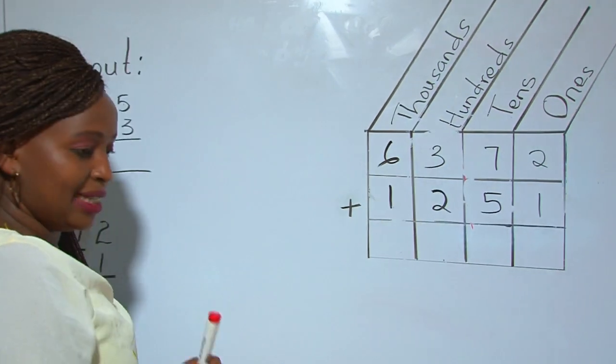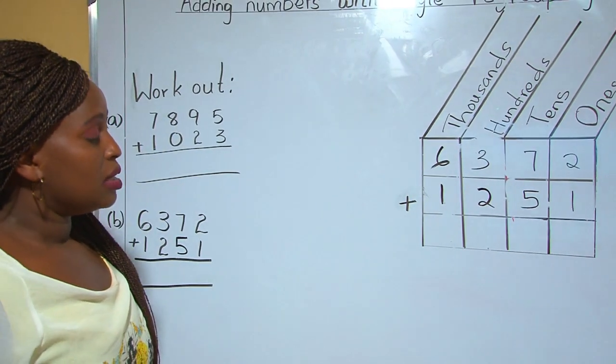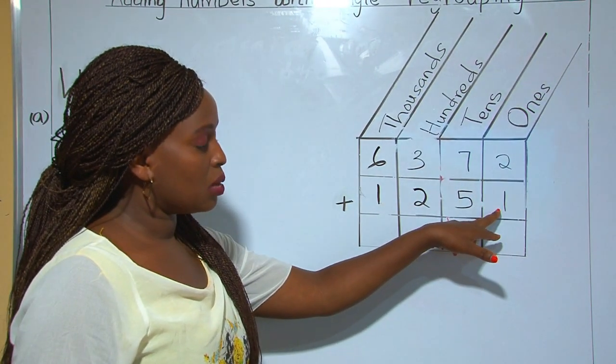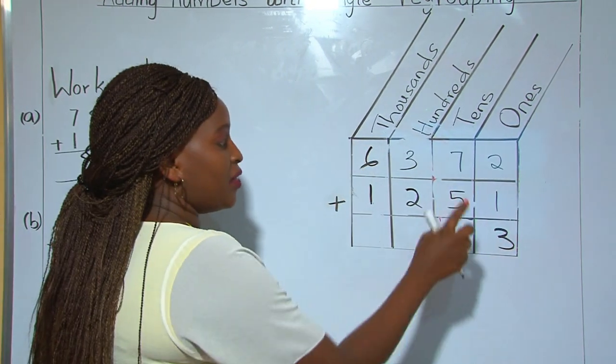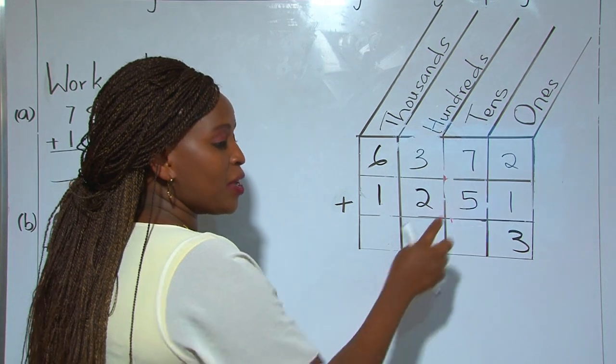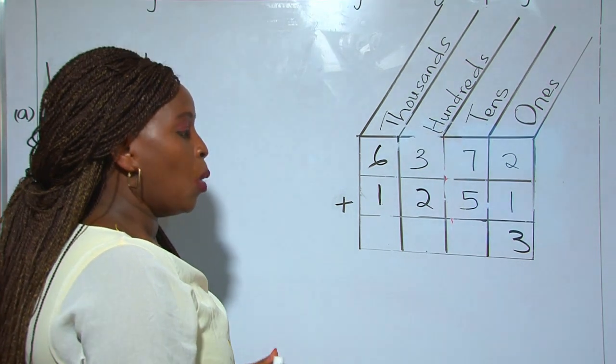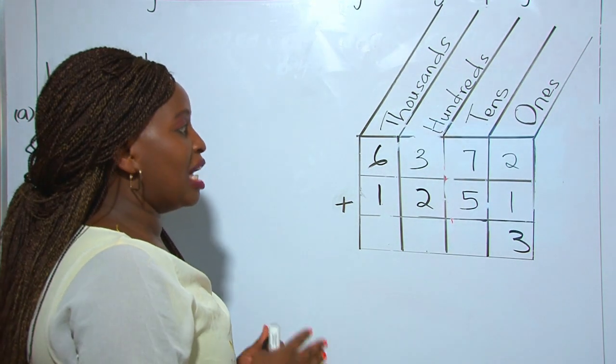Now let's add. 2 plus 1 ones equals 3 ones. Then 7 plus 5 is 12. What are these 12? These are 12 tens.